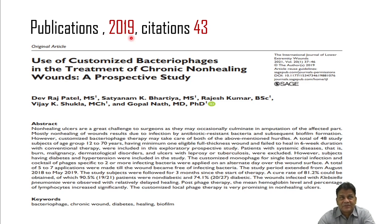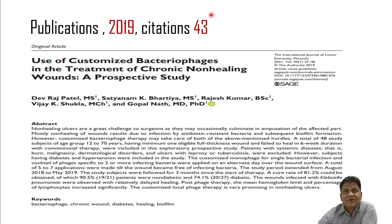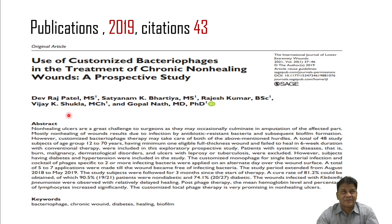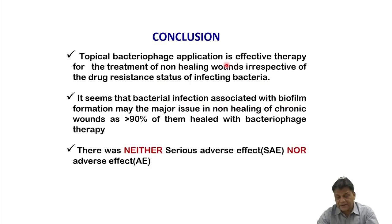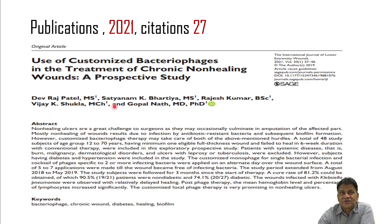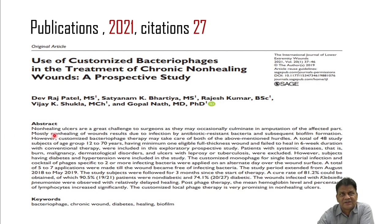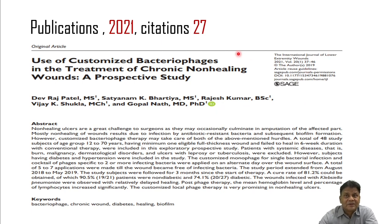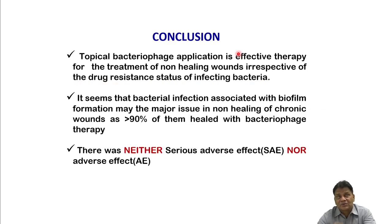We have published two papers based on this work. The first, a prospective clinical trial from 2019, has received 43 citations to date and is expected to reach 50 soon. The second paper, covering the randomized controlled trial data with many of the cases shown here, was published in December 2021 and has 27 citations in a journal with impact factor around 2.5. Together, these two papers have accumulated over 60 citations within approximately one and a half years.